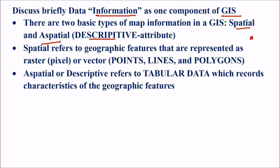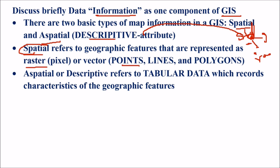A building at a location could be the Empire State Building, India Gate, or the Leaning Tower of Pisa — these are descriptions of this architecture or monument. Spatial refers to geographic features represented as raster or pixel or vectors. Anything represented in the form of raster and pixels is spatial data, like points, lines and polygons. These are vectors, and pixels are raster. Together they form spatial data.